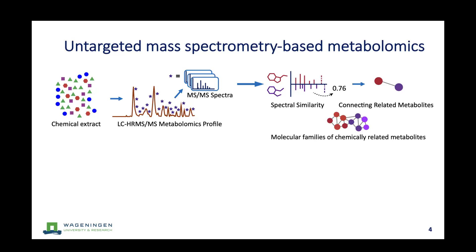Most of the work starts with chemical extracts. You get these information-dense metabolomics profiles with a lot of spectra that you want to understand. We use approaches like spectra similarity and topic modeling to connect related metabolites based on their spectra — if we can do that, we can understand which spectra belong together and start to build molecule families of related metabolites.